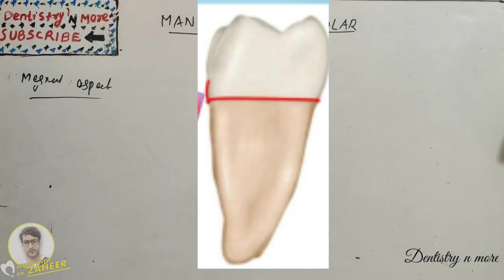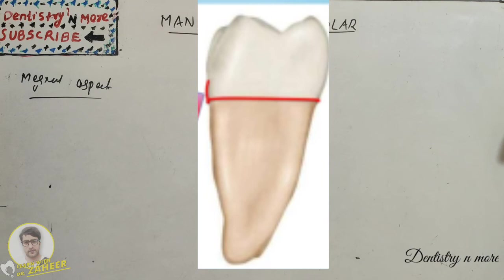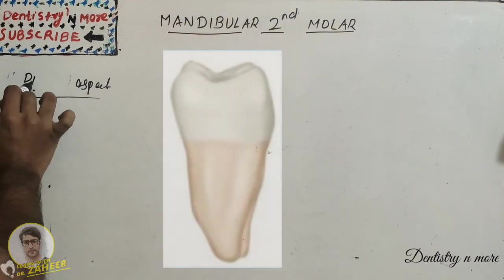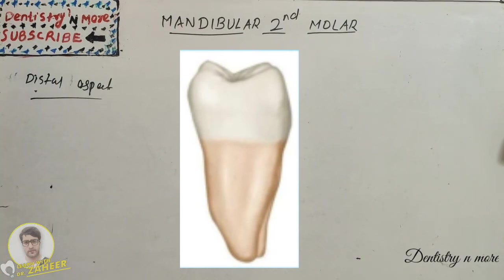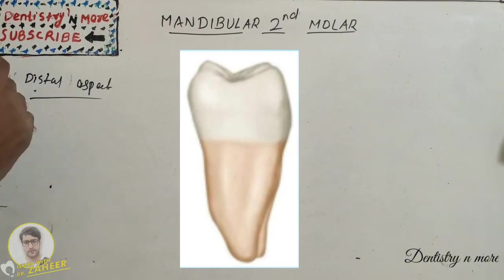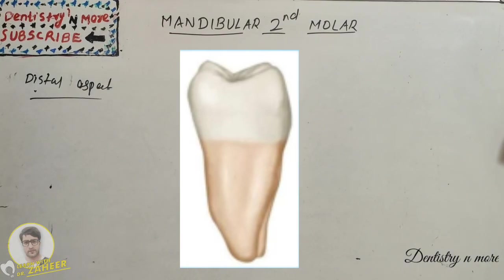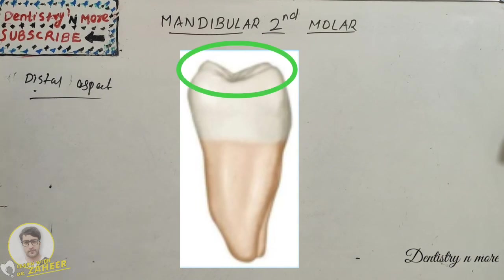Whereas the distal aspect, the absence of distal cusp and distobuccal groove compared to the mandibular first molar is smaller, and most of the occlusal surfaces can be seen from distal aspect just like any other tooth.